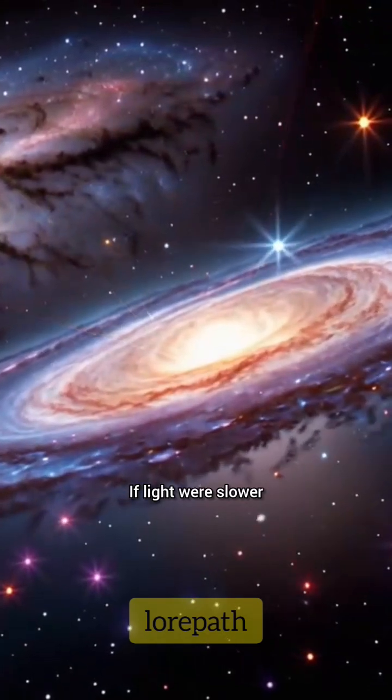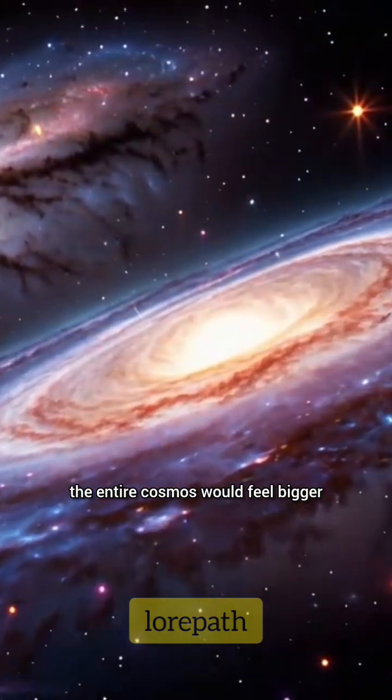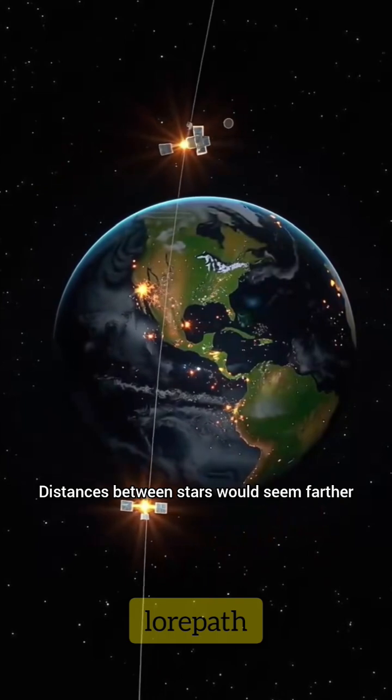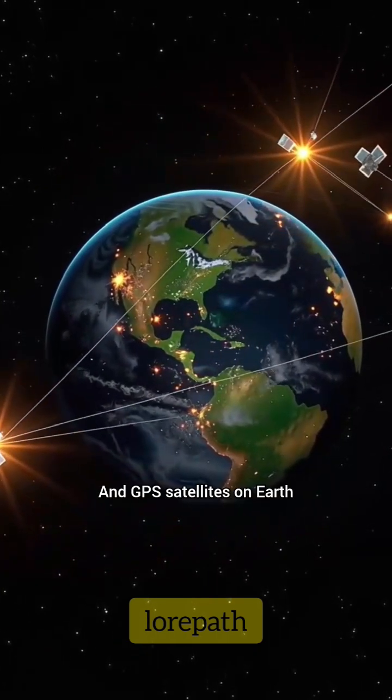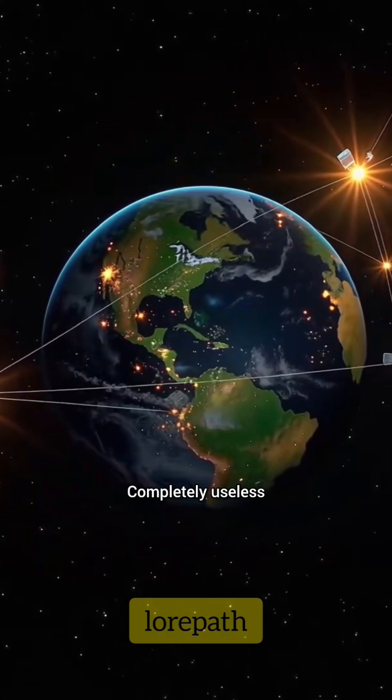If light were slower, the entire cosmos would feel bigger. Distances between stars would seem farther, communication across space would take longer, and GPS satellites on Earth? Completely useless.